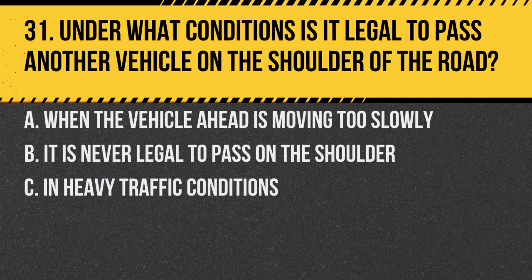Question 31. Under what conditions is it legal to pass another vehicle on the shoulder of the road? A. When the vehicle ahead is moving too slowly. B. It is never legal to pass on the shoulder. C. In heavy traffic conditions. Answer: B. It is never legal to pass on the shoulder. The shoulder is meant for emergencies, not for passing.